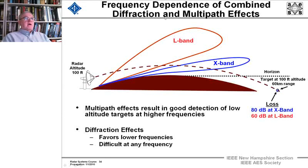And now let's look at the combination of effects, where we look at the frequency dependence combined with diffraction and multipath effects. The multipath effects result in good detection of low-altitude targets at high frequencies. At high frequencies, you have a lot of bands. We went over that earlier. And at low frequency, diffraction is favored. Now let's look at a target here that is at an altitude of 100 feet at a range of 60 kilometers. And the radar altitude height is 100 feet. The loss at x-band, even though the multipath is better, the loss at x-band is 80 dB, while the loss at L-band is 60 dB. So diffraction effects favor the lower frequencies, and it's difficult at any frequencies as the takeaway. Those are big numbers to overcome.